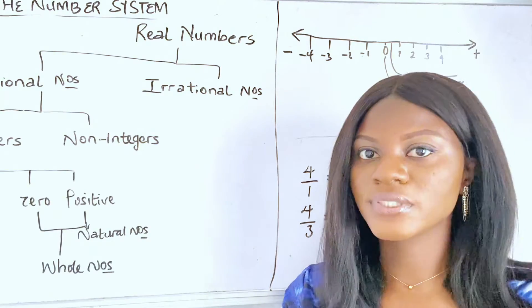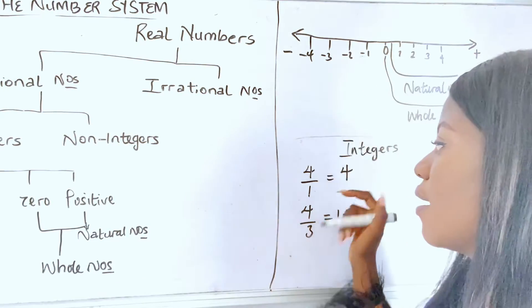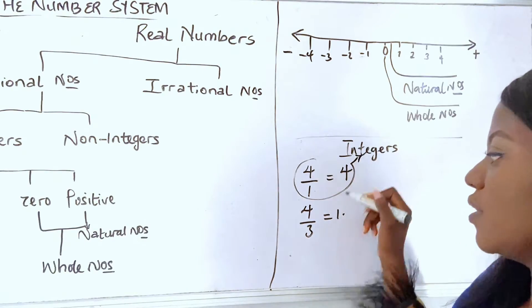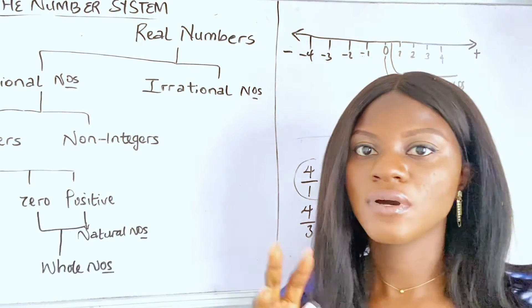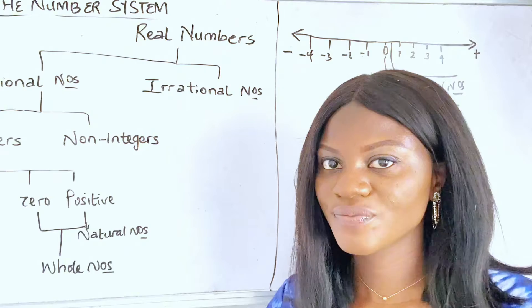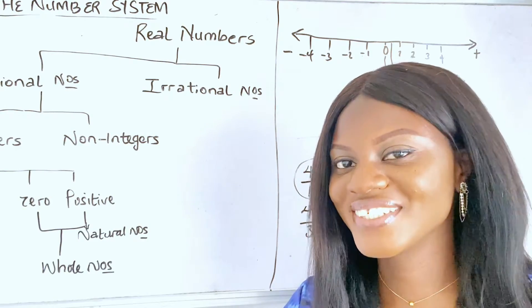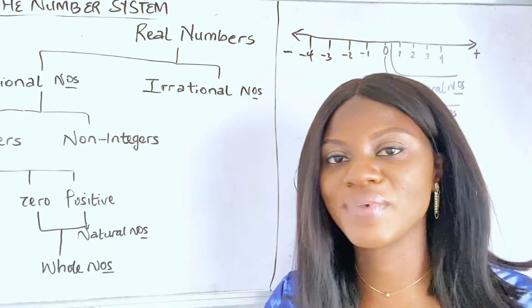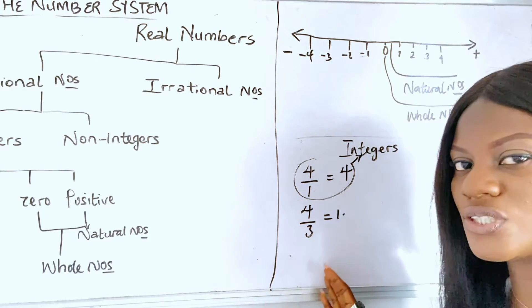These numbers, all numbers can be divided by one, are integers. But if they are divided by numbers that are not one, they are divided by numbers that are not one. And I hope that statement makes sense. They are non-integers.